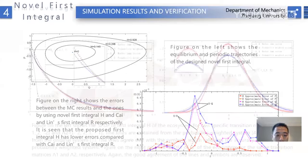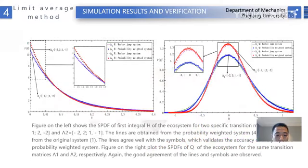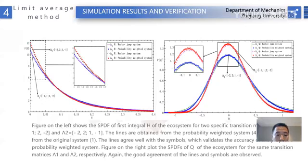Then, I want to prove the effectiveness of the limit-average method. The figure on the left shows the stationary probability density function of the force integrator H of the ecosystem for two specific transition matrices, lambda-1 and lambda-2. The lines are obtained from the probability-weighted system, and symbols from the original system 1. The lines agree with the symbols, which validates the accuracy of the proposed probability-weighted system. The figure on the right plots the stationary probability density function of Q on the ecosystem for transition matrices lambda-1 and lambda-2, and again good agreement of lines and symbols is observed.